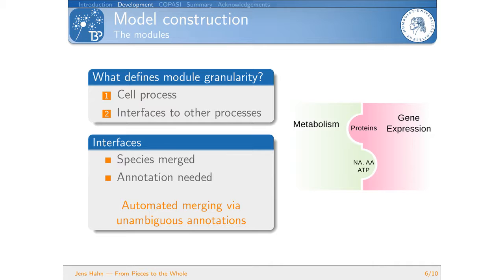And then secondly, we have these interfaces as I said already. And the framework merges the species automatically. So we use annotations like KEGG IDs, GO annotations, SBO annotations to really unambiguously identify all the species. And then the framework is able to merge or combine these modules together to get one simulation result.